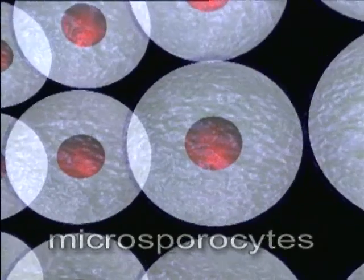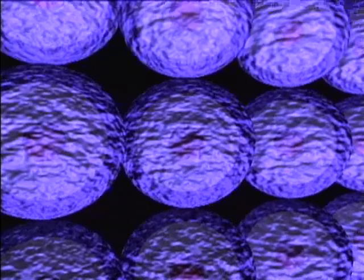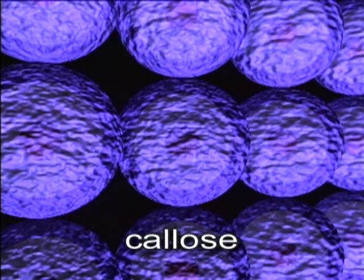The nucleus of a sporocyte cell is diploid, containing two sets of chromosomes, one from each parent. As each sporocyte prepares to divide, it deposits a layer of inert callose. Callose effectively isolates the microsporocytes from one another.